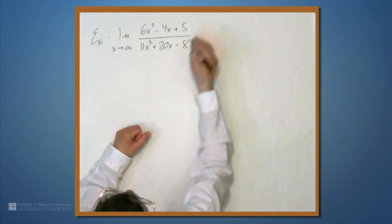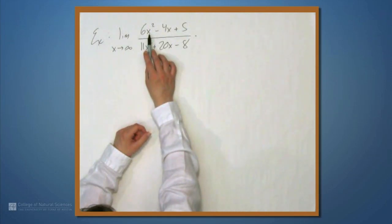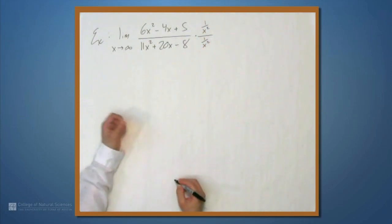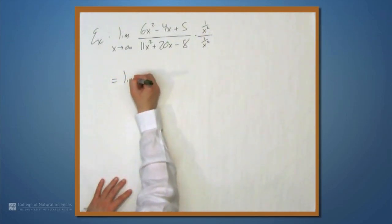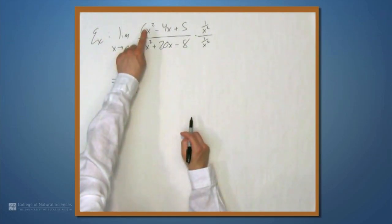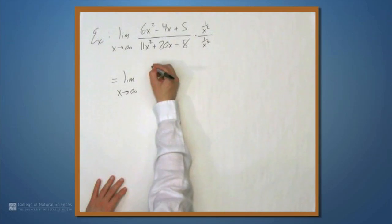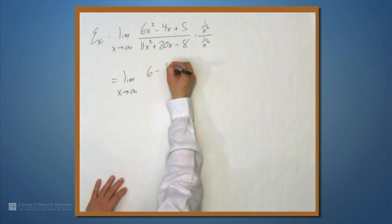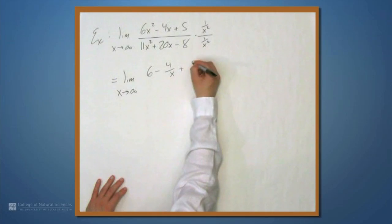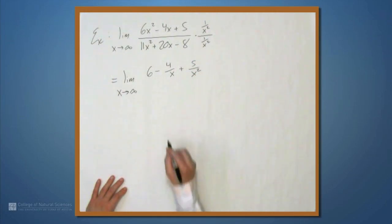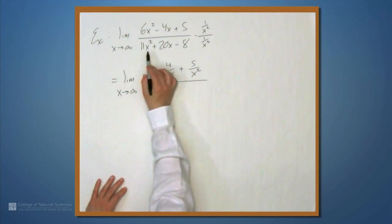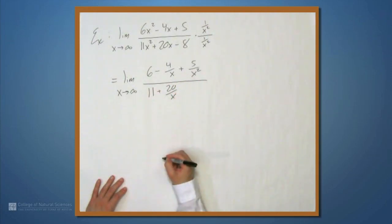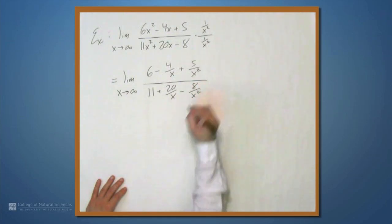So what we're going to do first is multiply both the top and the bottom by 1 over x squared. We get the limit as x approaches infinity. Now we have 6x squared times 1 over x squared, so the x squareds cancel and we're left with 6. Then we have minus 4x divided by x squared, so we get minus 4 over x, and then plus 5 over x squared. We do the same thing to the denominator: 11x squared over x squared gives 11, plus 20 divided by x, minus 8 divided by x squared.